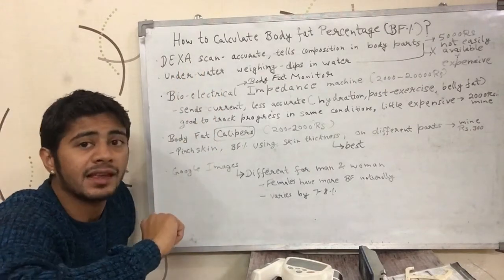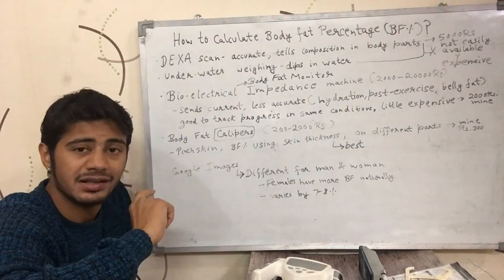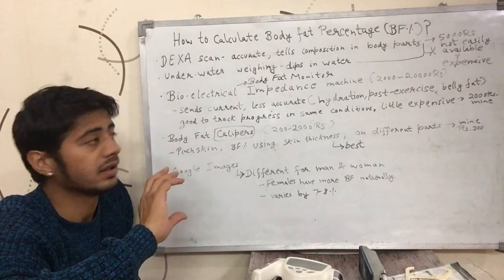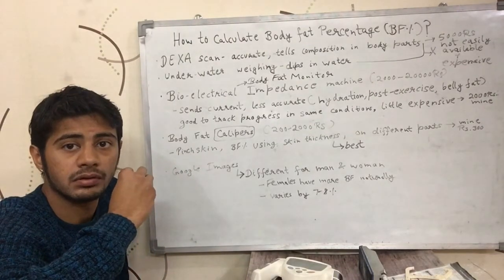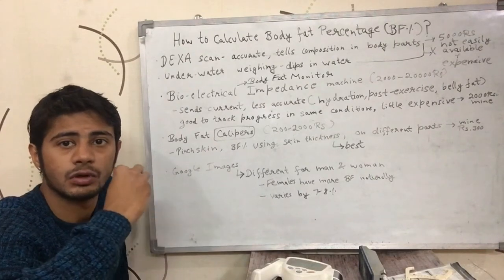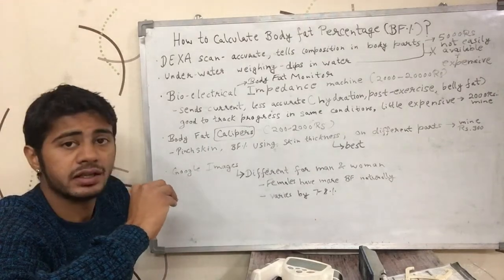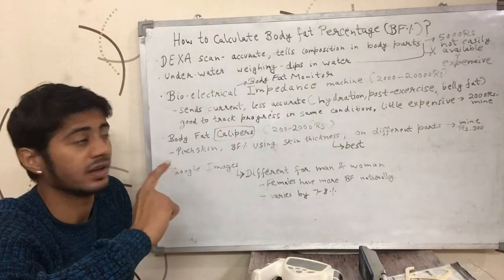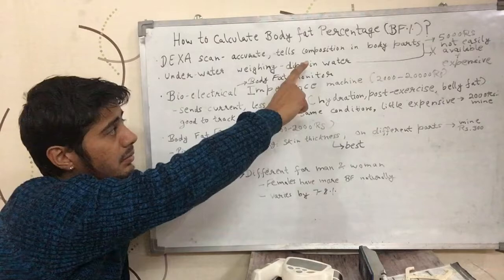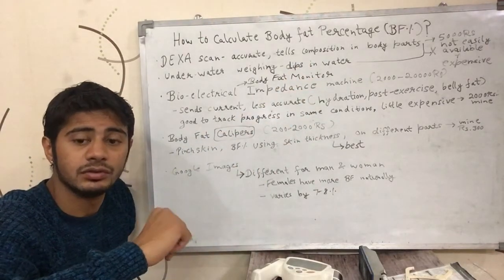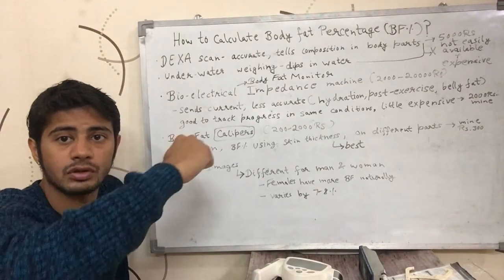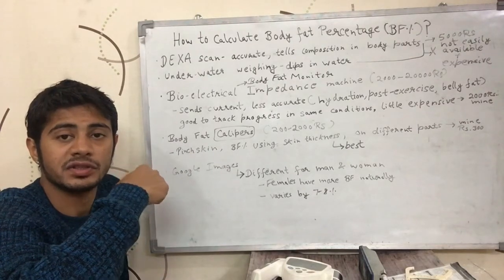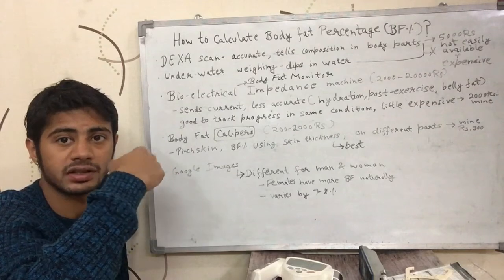Starting with the first, which is the DEXA scan. It is basically a scan which you can get done in some hospitals. They would pass some rays through your body and give you readings of your body fat, the amount of fat in the body, and the amount of muscle. It is one of the most accurate methods out there to get your body fat percentage. It tells you body composition — for example, it might tell you that your right hand has a little more muscle than your left hand.